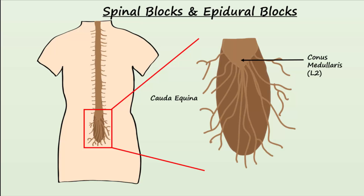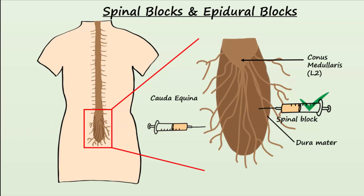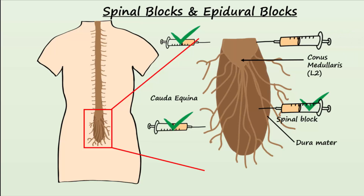When giving spinal anesthesia or spinal blocks, the needle penetrates the dura mater and enters the thecal sac. Spinal blocks must be administered below L2 to avoid penetrating the pia mater and damaging the spinal cord. Epidural blocks are also often administered below L2 to anesthetize nerves associated with labor and delivery, but the epidural does not penetrate the dura mater. When it is necessary to anesthetize nerves above L2, an epidural may be given above L2 since it doesn't penetrate the dura mater. A spinal block, which penetrates the dura mater, is never given above L2.